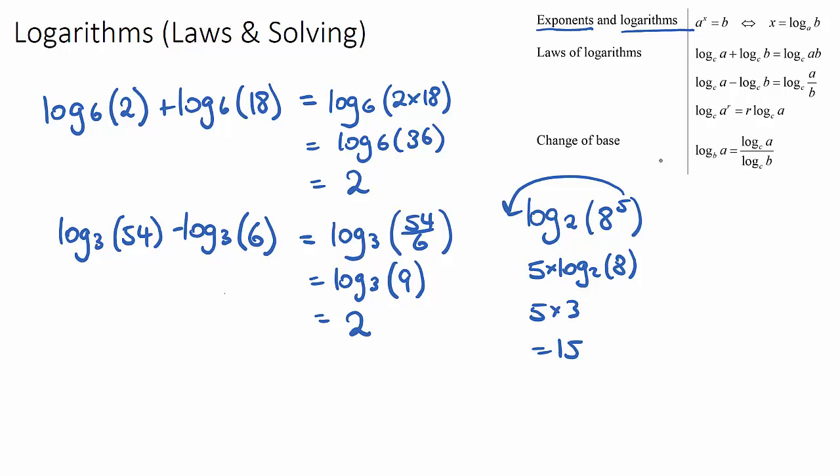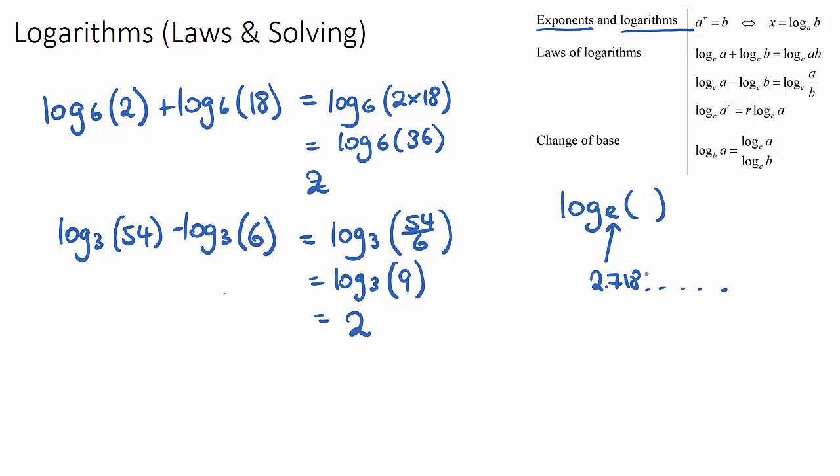So just before we finish up, I'm going to introduce one other interesting part about logs, this E, log base E. Let me create some space here. If you see log base E, this E is actually a number, it's Euler's number, depending on how you pronounce his name. And this E is a number, 2.718... It's a famous mathematics number, just like pi.